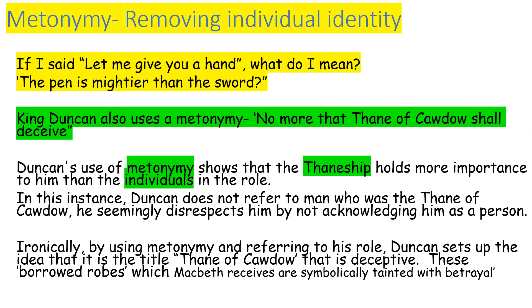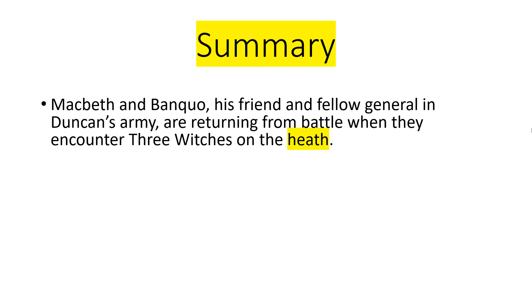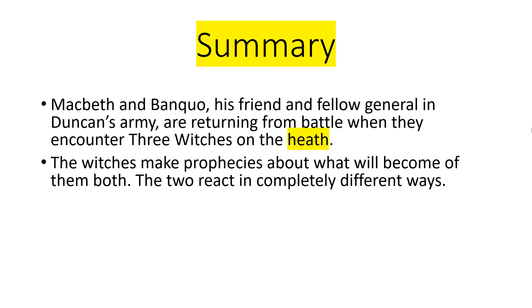In Act 1, Scene 3, Macbeth says 'why do you dress me in these borrowed robes?' — which refers back symbolically to the tainted robes being full of betrayal and being poisonous. That's something we're going to go through today. So, the summary of Act 1, Scene 3: Macbeth and his friend Banquo, a fellow general in King Duncan's army, are returning from battle when they encounter three witches on the heath — a secluded area. The witches make prophecies regarding both of them and speak to them, confusing them. Banquo and Macbeth react in completely different ways, and that's quite important for you to understand.